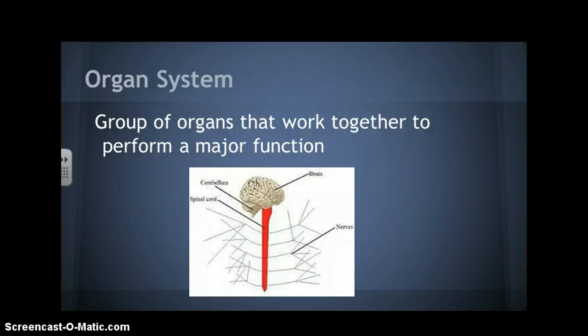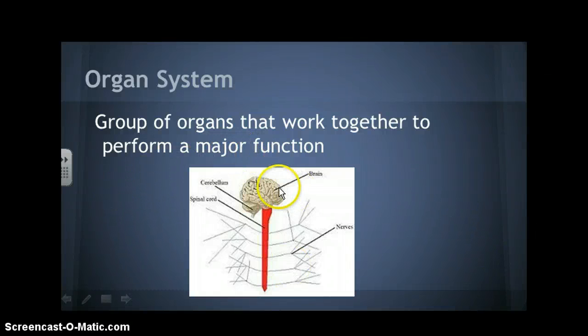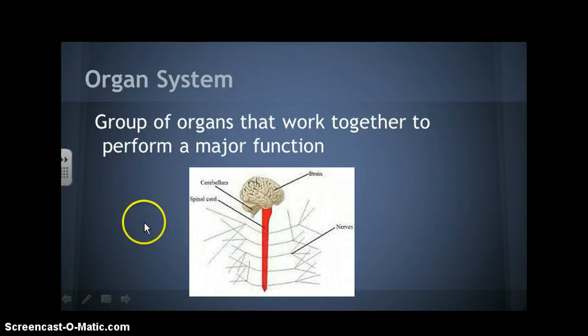Organ systems are groups of organs that work together to perform a major function. For instance, here we have an example of the nervous system — the central nervous system to be exact — which includes the brain, the cerebellum, the spinal cord, and all the peripheral nerves.